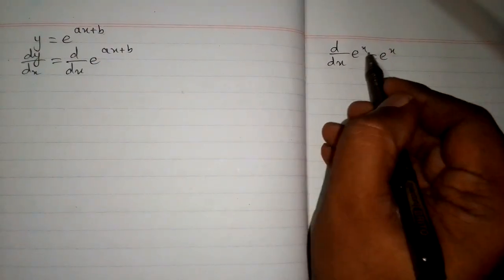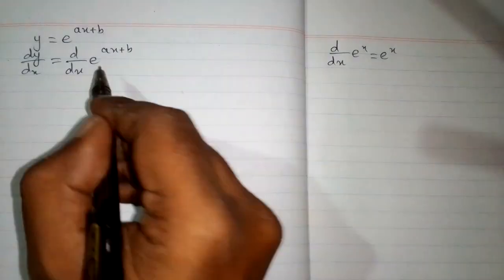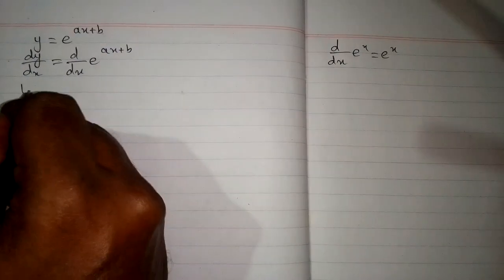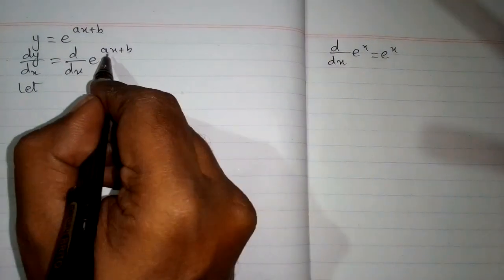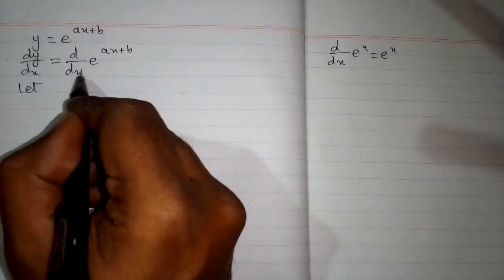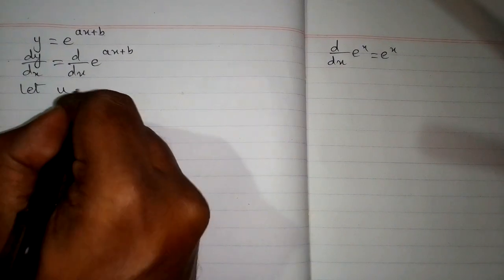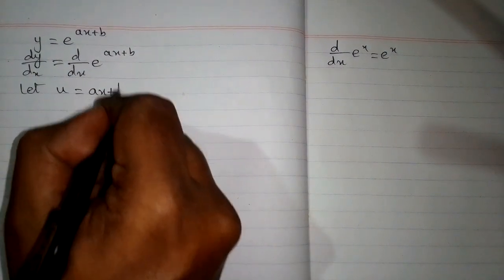But we can apply this formula when this variable and this variable are the same. We can see that these are not the same. So suppose u is equal to ax plus b.